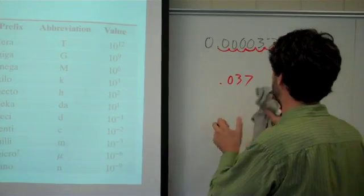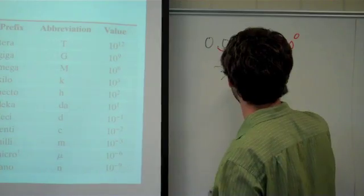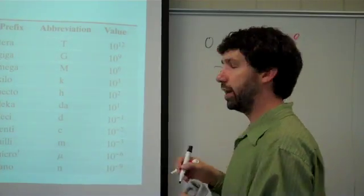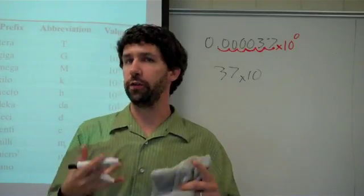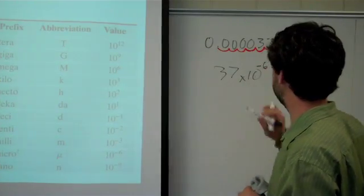We've moved right six places. So now we have 37 times 10... And now at this point, hopefully you're starting to get the point where you're like, well, this is something small, so it should be a negative exponent, so it should be negative sixth.